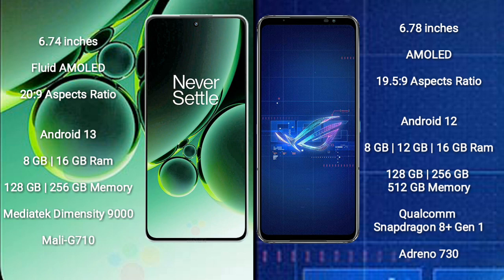OnePlus Nord 3 has 128GB to 256GB internal storage, a MediaTek Dimensity 9000 processor, and a Mali-G710 GPU.